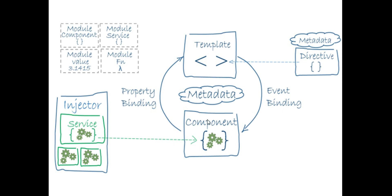To connect our component to the template we use data binding. If we want to send any data or value — like name equal to 'Nilkant' — and show it on the template, then we use property binding. I'll be explaining how property binding is done in the later part.